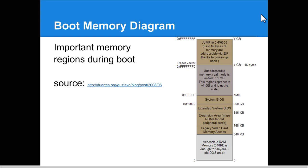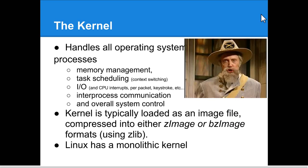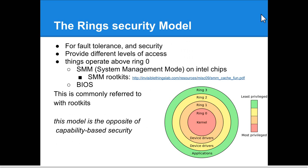The BIOS is ultimately the authority of what is and isn't installed in the system. Linux has popular boot loaders such as GRUB and LILO that present boot options. The function 'start_kernel' starts the idle process, process scheduler, and the init process. The kernel handles all operating system processes — memory management, task scheduling, input/output, inter-process communication, and overall system control. It is typically loaded as an image file compressed with either zImage or bzImage formats. Linux is known for having a monolithic kernel, but there's a trend now toward micro-kernels where the kernel becomes smaller and drivers are pushed outside.